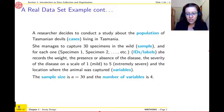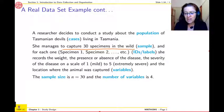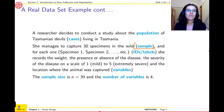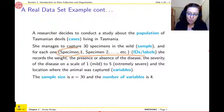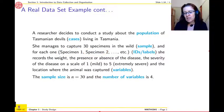So the researcher captures 30 specimens in the wild. So this group of 30 specimens is going to be called a sample. It's a subset of the population. And then for each of them, she labels them and called them specimen one, specimen two. And we say that these are the IDs or the labels.